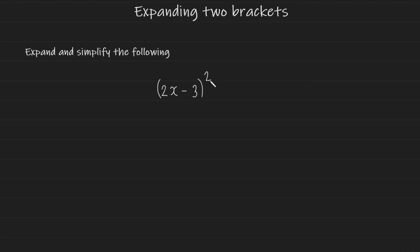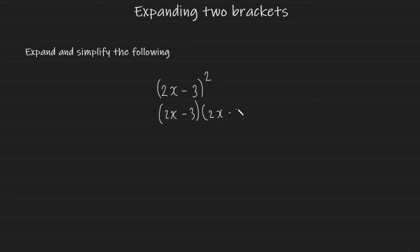When you have a square on top here, what it means is this 2x minus 3 is being multiplied by itself twice. So it looks like this: 2x minus 3, times 2x minus 3. So you're actually required to expand two brackets whenever you see an expression in a bracket squared.